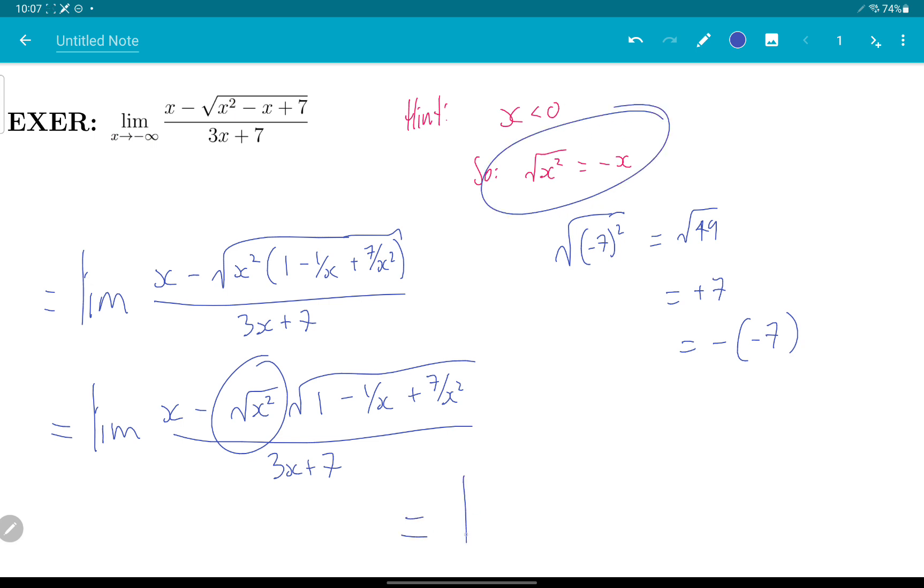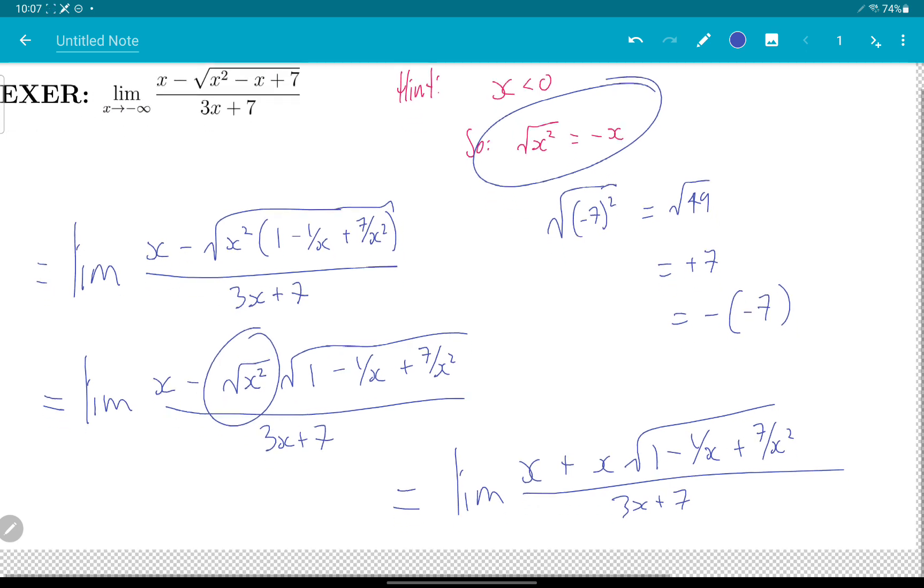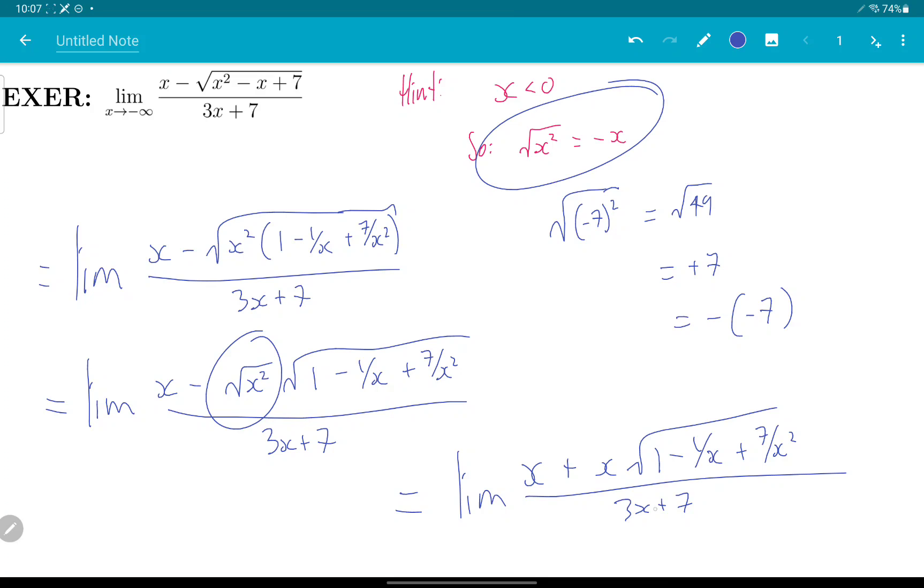So I get limit x, it becomes plus x. And downstairs, why don't I cross that out and factor out an x instead, just to speed things up a little bit here.